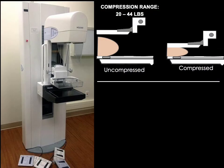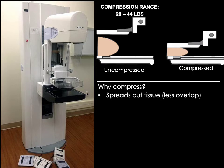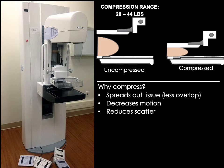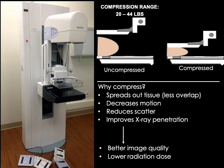Now let's talk about the compression paddle and why compression is so important in mammography. First, compressing the breast spreads out the breast tissue so there's less overlap, improving visibility of structures within the breast. Second, compression helps to decrease motion because the breast is immobilized. Third, by compressing the breast tissue, we decrease the thickness of tissues that x-rays pass through, which reduces scatter and improves x-ray penetration. This gives us better image quality and decreases dose.